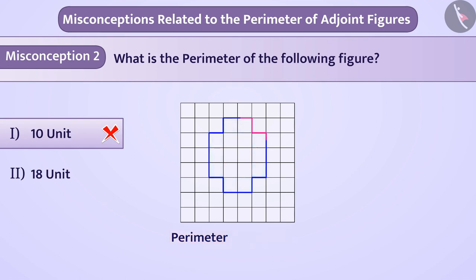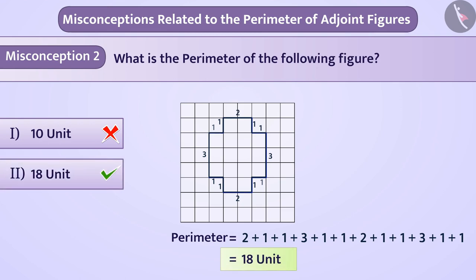The total length of the boundary of closed figure is called its perimeter. So, we have to add the lengths of all the sides of this figure. By addition, we will get the perimeter of this figure as 18 units. Therefore, the perimeter of the given figure is 18 units. Hence, option 2 is the correct answer.